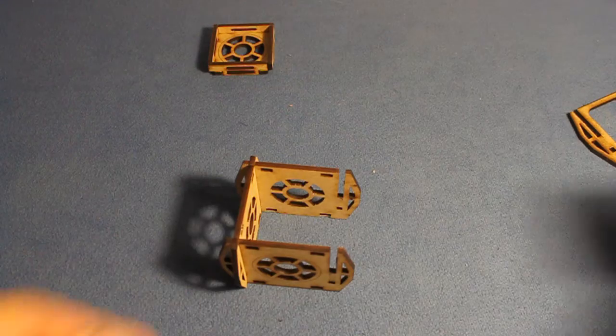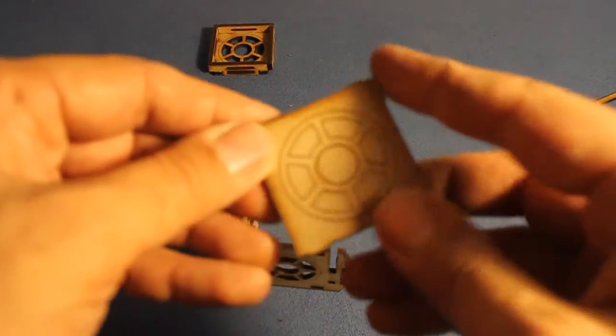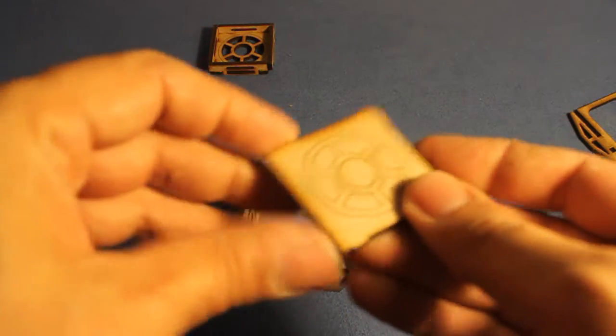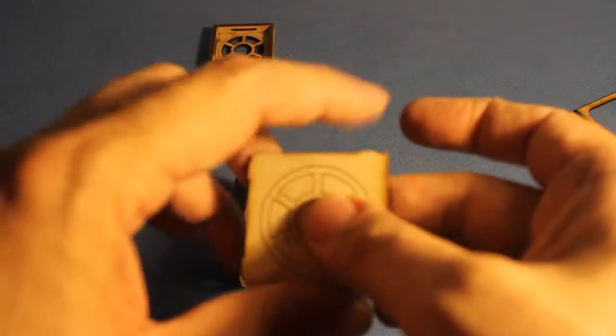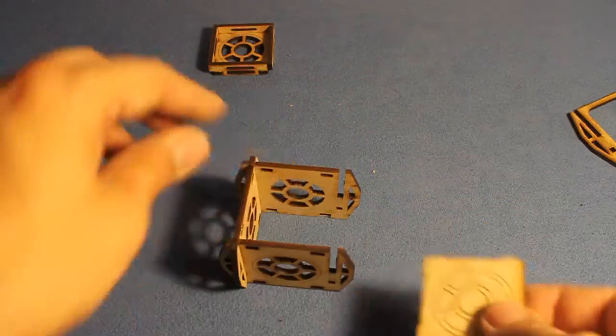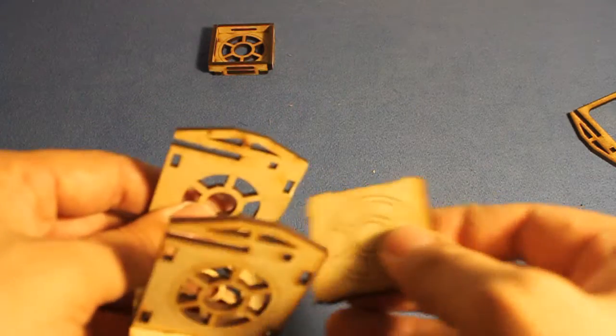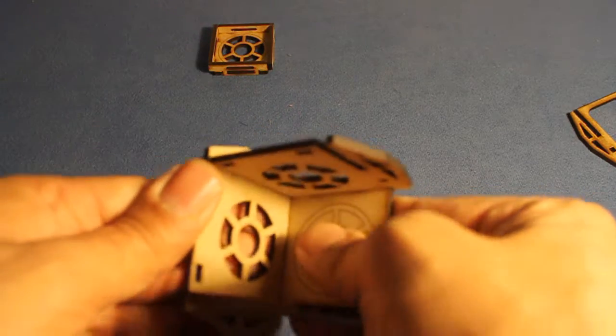Now we'll take the floor. The floor is solid, it doesn't pop out. You'll notice that there's tabs, one, two, one, two, one, two. One side does not have tabs. I'm going to leave that for the open side, so I'm going to pop that in there.